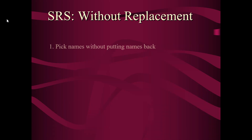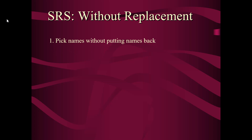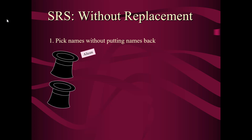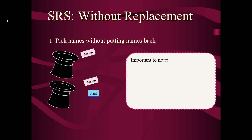Without replacement means picking names without putting the name back. Here we have our hat. I pick Allison — I don't put her name back in. Then I pick again and I pick Paul. The first person, Allison, had a 1 in 100 chance of being picked because at that time there were 100 names in the hat. The second person has a 1 in 99 chance of being picked, because Allison's name was left out, leaving 99 names. So Paul was picked when everyone had a 1 in 99 chance.